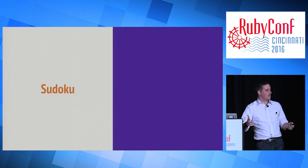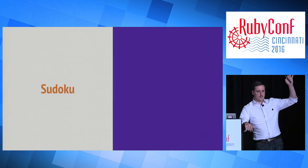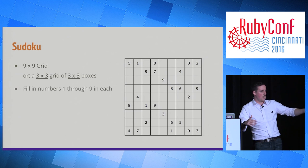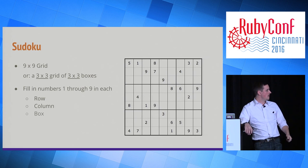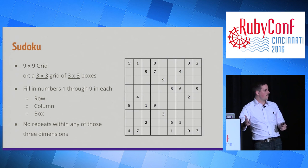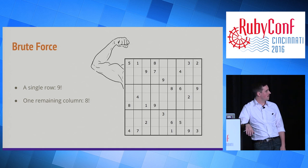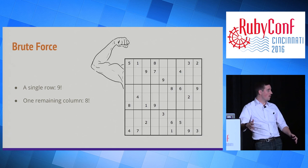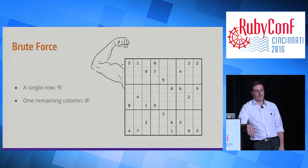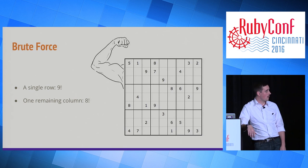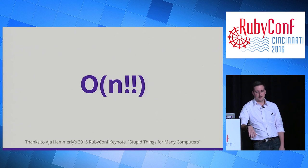Another problem really well suited to constraint propagation is Sudoku. Nine-by-nine grid, rows, columns, and boxes that you're filling one through nine into, not allowed to have any repeats. Brute force is possible if you've got a small grid and a lot of information, but the less information we have the worse it gets. A single row has nine-factorial possibilities. As Aja Hammerly pointed out in her keynote last year, this is O(n!!) — big O of n-bang-bang — which is horrific. We need to do something better than this. So constraint propagation comes in, and we can pretty much convert those Sudoku rules into a set of constraints that we apply repeatedly over and over again.